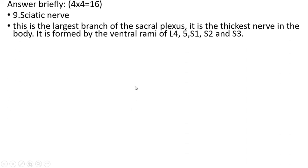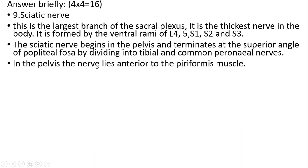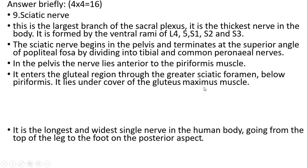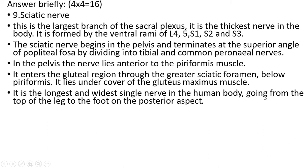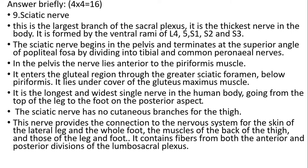Ninth question: sciatic nerve. It is the largest and thickest nerve of the body. It is formed by the ventral rami of L4, L5, S1, S2 and S3. The sciatic nerve begins in the pelvis and terminates at the superior angle of the popliteal fossa by dividing into tibial and common peroneal nerves. In the pelvis, the nerve lies anterior to the piriformis muscle. It enters the gluteal region through the greater sciatic foramen below the piriformis and lies under cover of the gluteus maximus muscle. It is the longest and widest single nerve in the human body, going from the top of the leg to the foot on the posterior aspect. The sciatic nerve provides connection to the nervous system for the skin of the lateral leg and sole of the foot, the muscles of the back of the thigh, and those of the leg and foot. It contains fibers from both anterior and posterior divisions of the lumbosacral plexus.